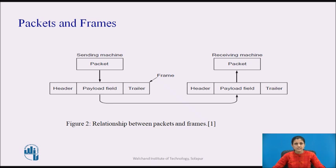The data link layer takes the packets from the network layer and encapsulates them into frames for transmission. Each frame contains the frame header, a payload field for holding the packet, and a frame trailer as shown in figure 2. Error control is achieved by adding a trailer at the end of the frame. The trailer contains control information and is responsible for ensuring that frames are received intact or undamaged.